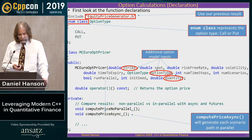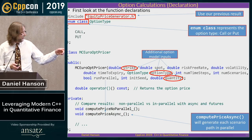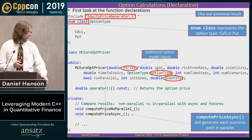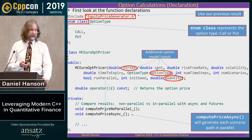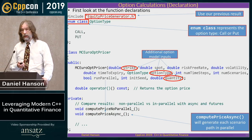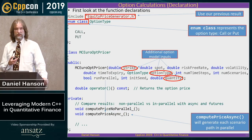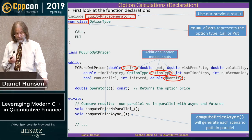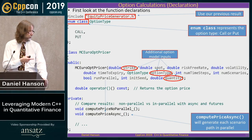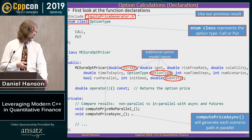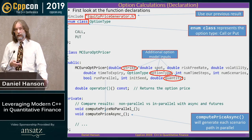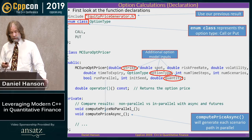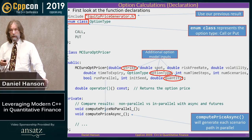Where most of the work will be done is in a private function called compute_price_async. This is where we use task-based concurrency to generate each scenario. To compare runtimes, I've also implemented a non-parallel version, so we can actually compare how much better we do.